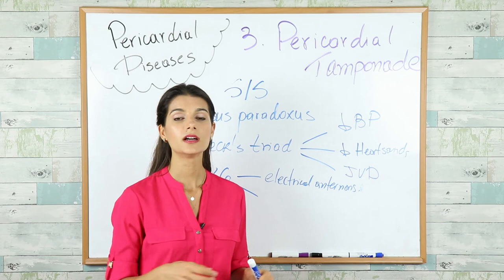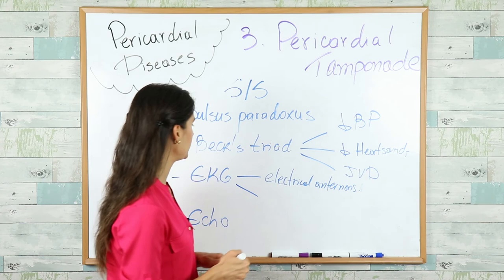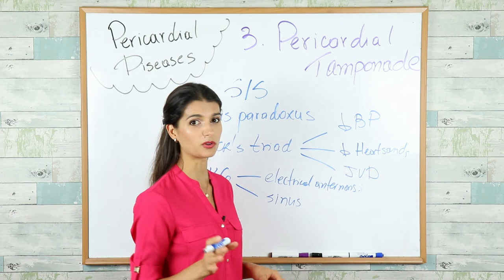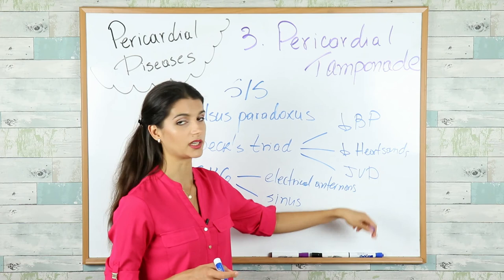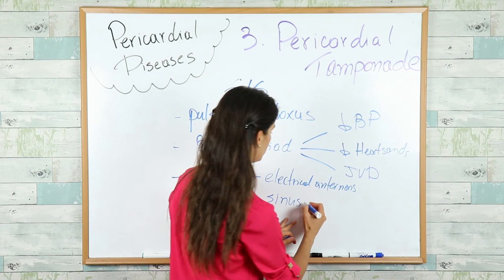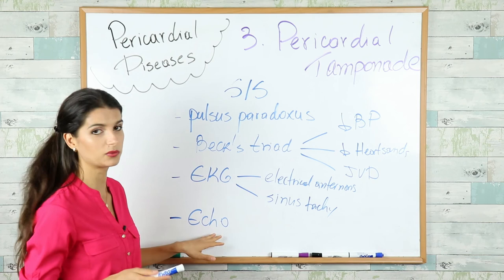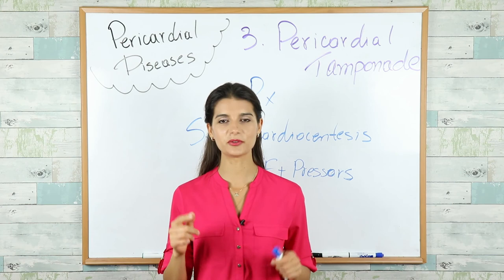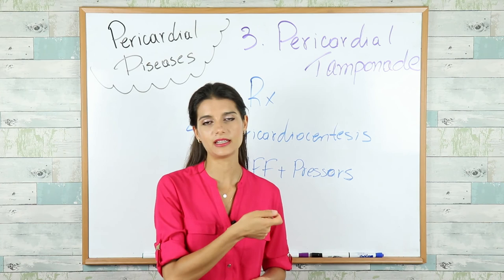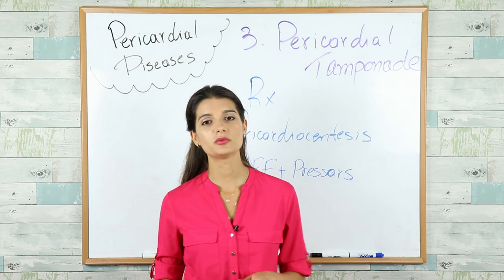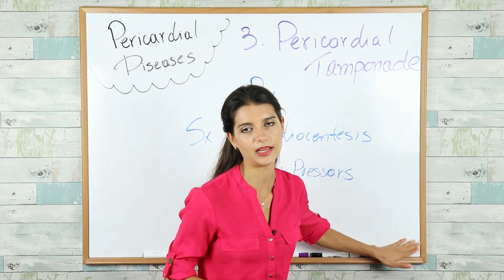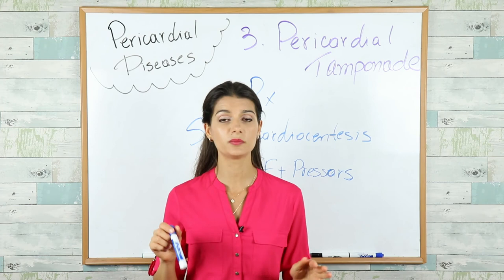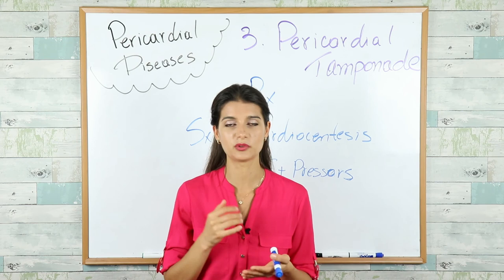You can also see sinus tachycardia — sometimes only sinus tachy without electrical alternans, but other symptoms and vignette clues can help orient the diagnosis. On echo, you'll see right atrial and right ventricular collapse during diastole. Treatment is pericardiocentesis — inserting a needle between the pericardial layers to drain the fluid. Give IV fluids and pressors to stabilize the patient hemodynamically. Do not give diuretics, as this will decrease right ventricular filling even further and can be fatal.